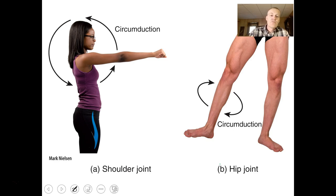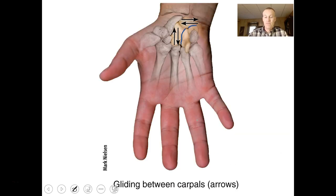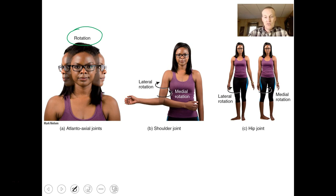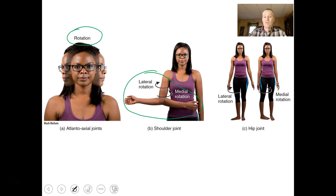If you take your arm and move it around in a circle, that's circumduction — you can do the same with the leg. There are many ways joints and wrists work, including gliding motions. You can rotate the head from side to side — that's like a pivoting rotation. Lateral rotation moves the arm outward; moving the arm across the belly is medial rotation. Same thing with your foot — you can do lateral and medial rotation.